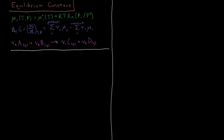We previously described the Gibbs energy change of reaction, which is equal to the partial derivative of the Gibbs energy with respect to the extent of reaction at constant temperature and pressure. That equals the sum over all products J of the stoichiometric coefficient times chemical potential, minus the same thing for reactants — the sum over all reactants i of stoichiometric coefficient times chemical potential.